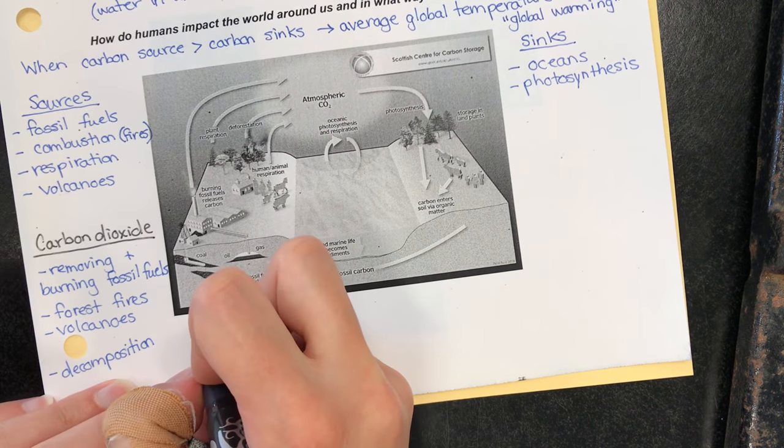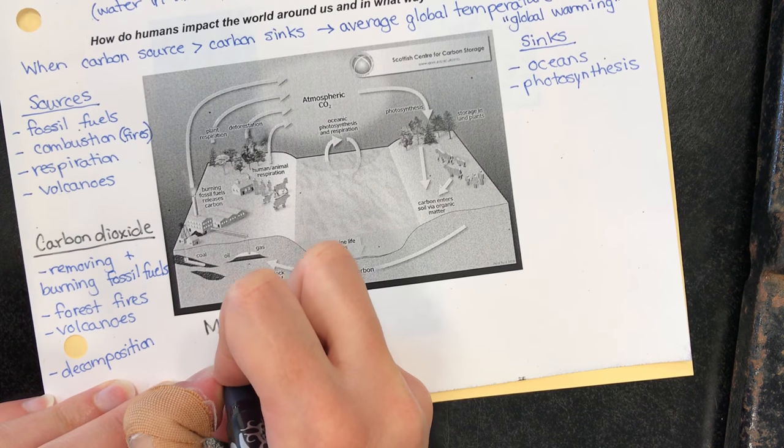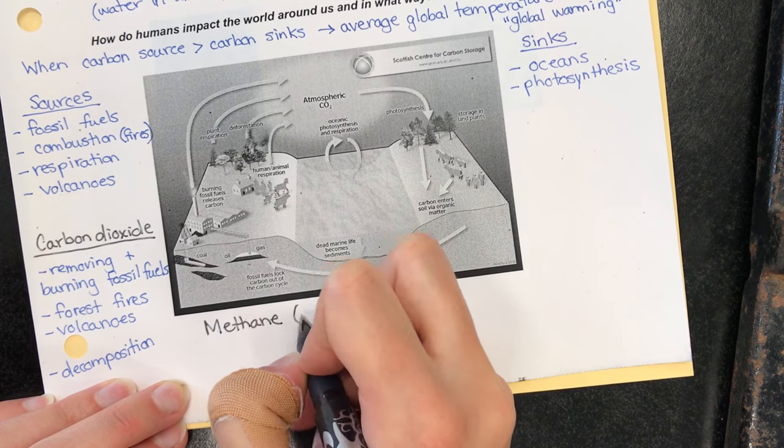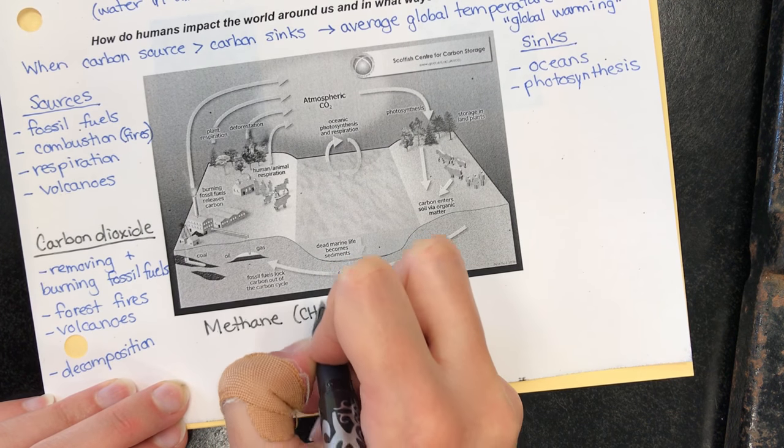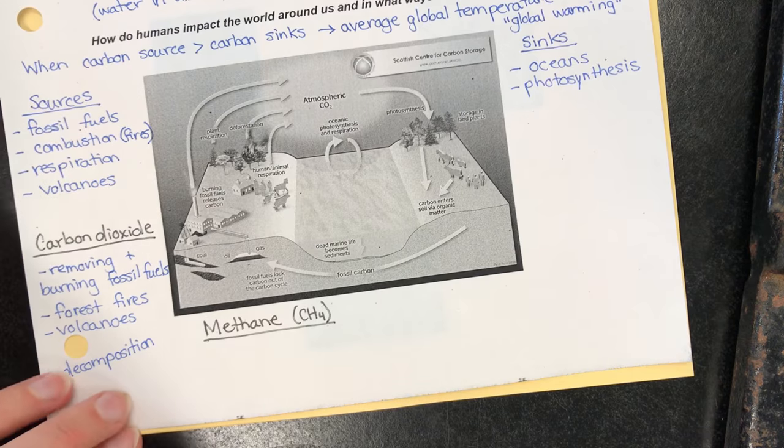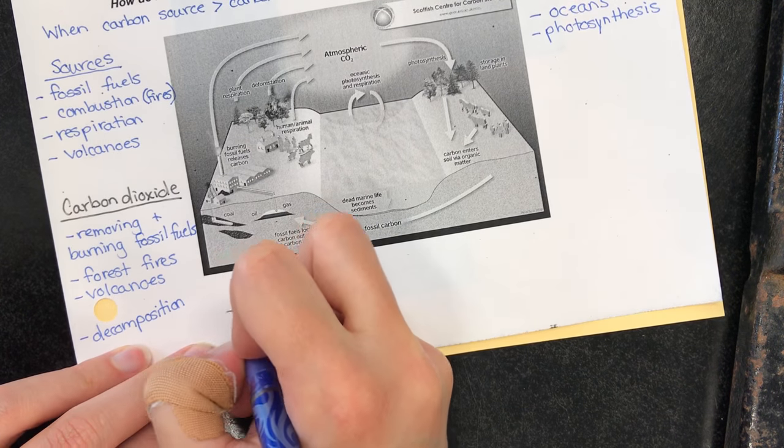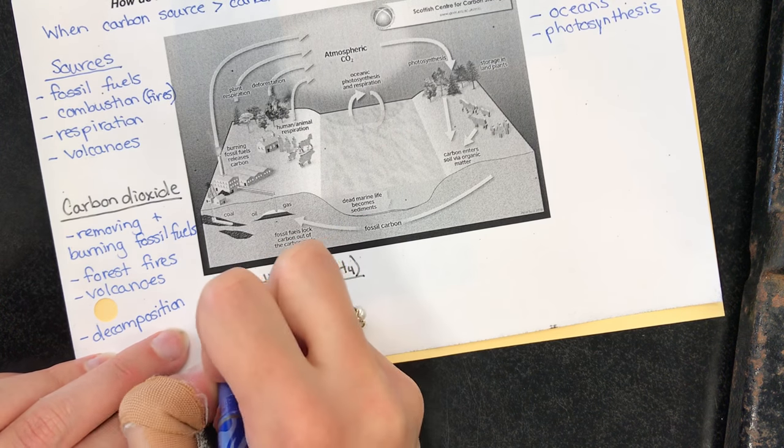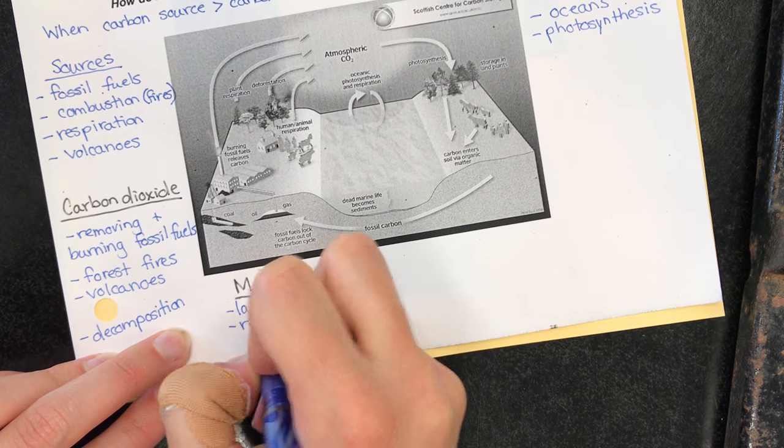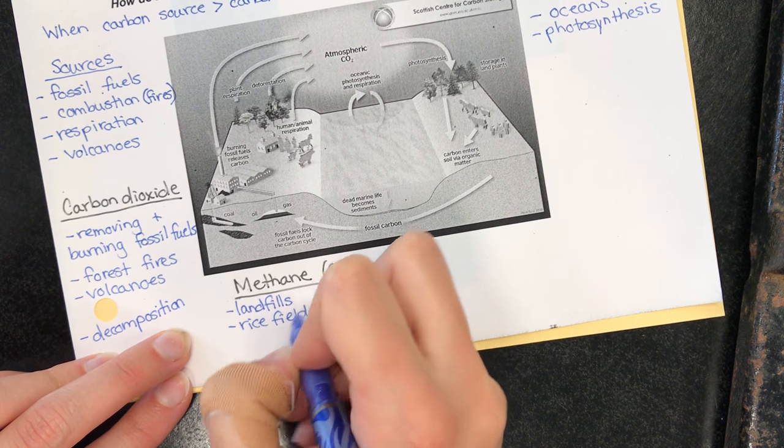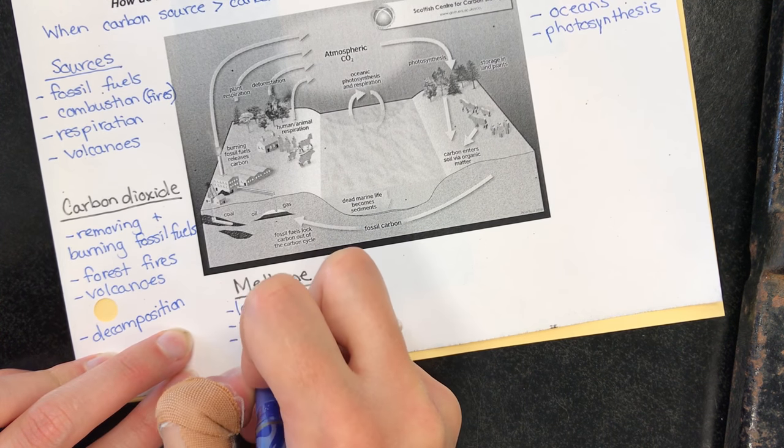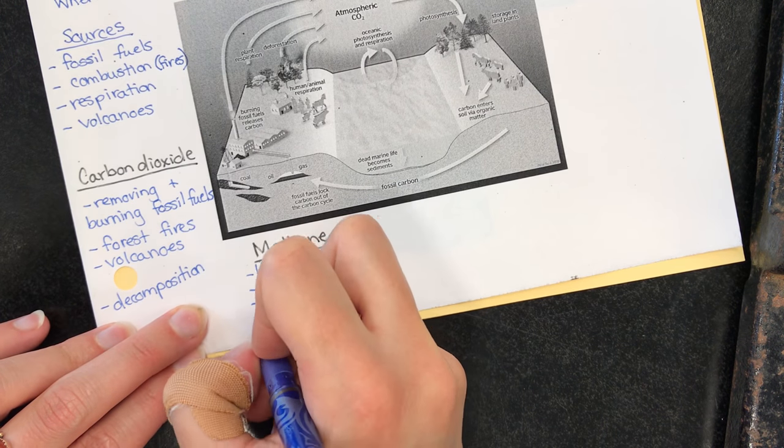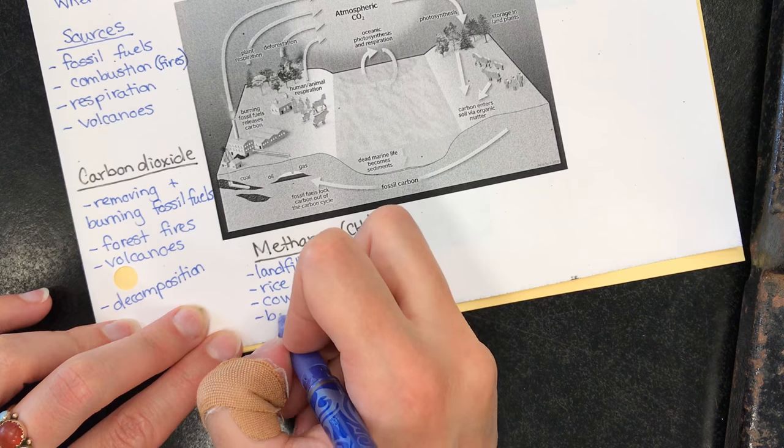The next one we're going to look at is methane, which is the most powerful greenhouse gas. Methane is CH4. This comes from landfills, rice fields. Cows are a big one, other animals but cows are the biggest. Bacteria and bogs, that's why they smell so bad.